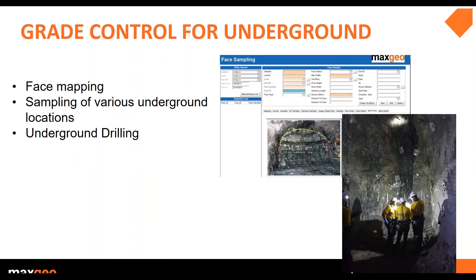Underground grade control also collects data from various sources, which includes mapping and sampling of stope faces, geotechnical mapping of those stope faces, various underground sampling locations like crosscuts and underground stockpiles, and diamond drilling and sampling. All the data collected during the underground and open-pit grade control process can be captured through MaxGeoSystem's digital capturing platform, LogGeo.